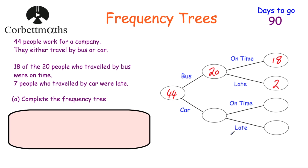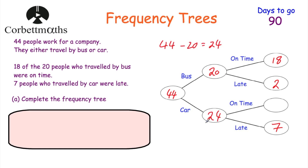Now let's have a look at the car part of the tree. 7 people who traveled by car were late. We know there are 44 people altogether and 20 traveled by bus, so 44 take away 20 is equal to 24 - meaning 24 traveled by car. 7 were late, so the rest were on time: 24 take away 7 equals 17, so 17 of them were on time. And that's it - we've completed the frequency tree for Part A.